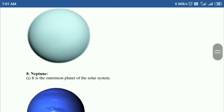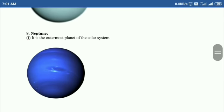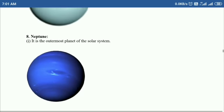Next one is Neptune. It is the outermost planet of the solar system. This is the image of Neptune, and that's all for now, students.